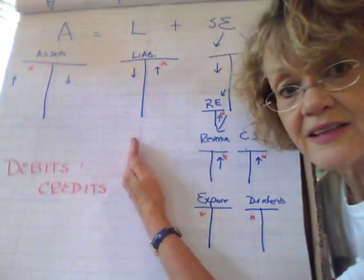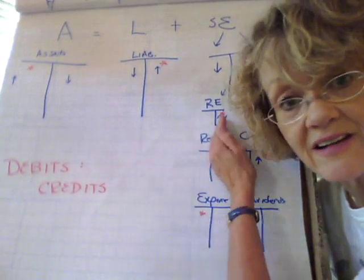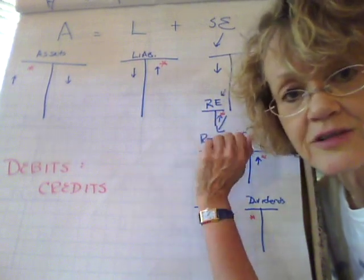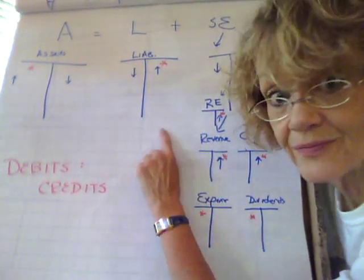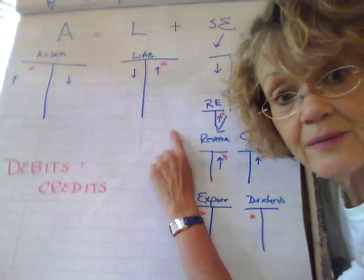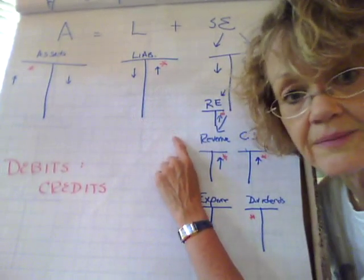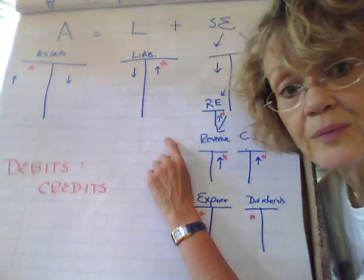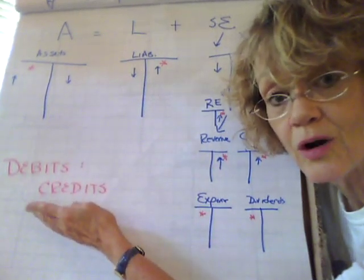Then on the liabilities and the stockholders equity, they're on the right side of the accounting equation. So when I think of right I use a synonym credit. So to increase a liability, give me an example of a liability. Accounts payable.